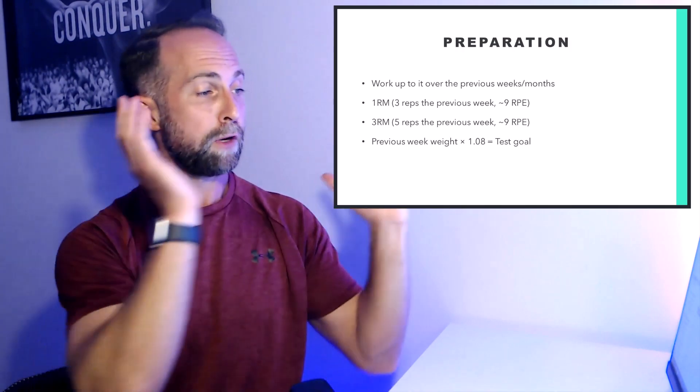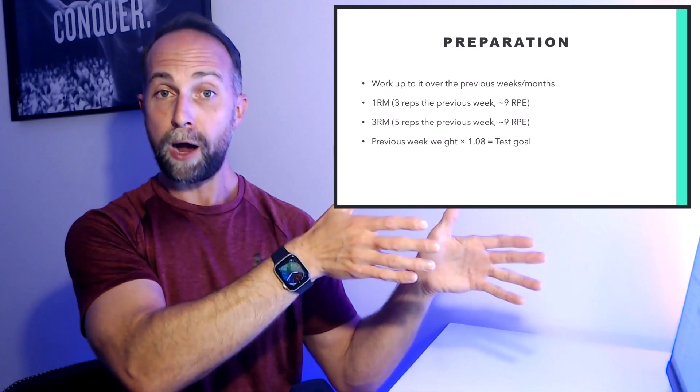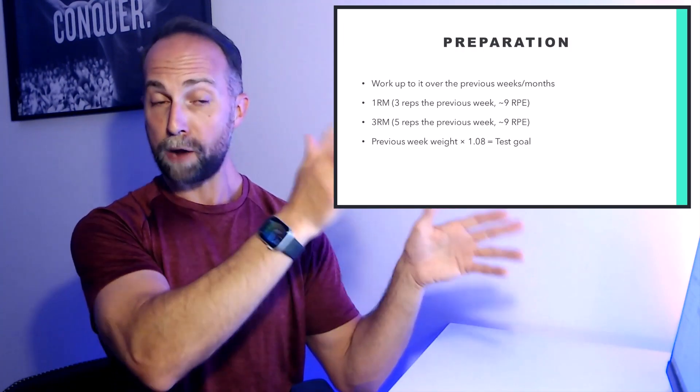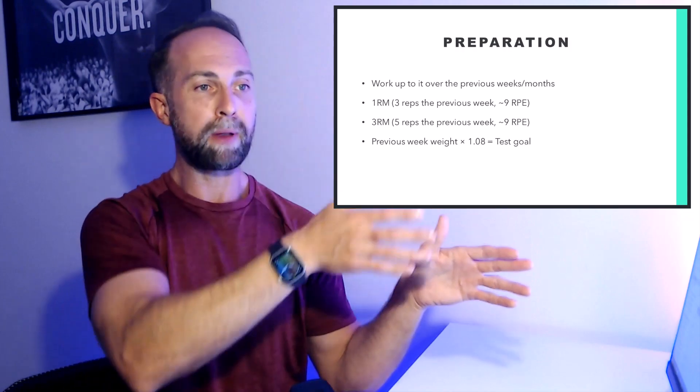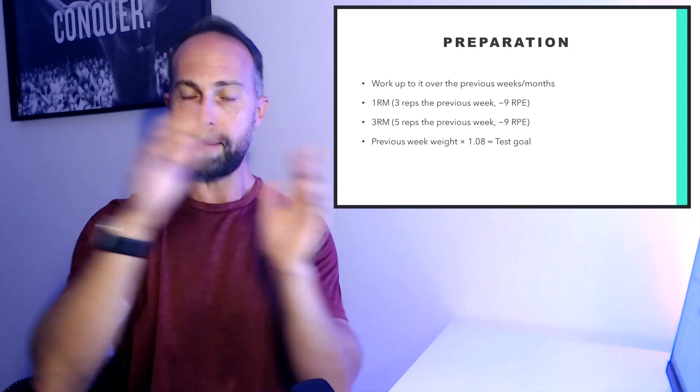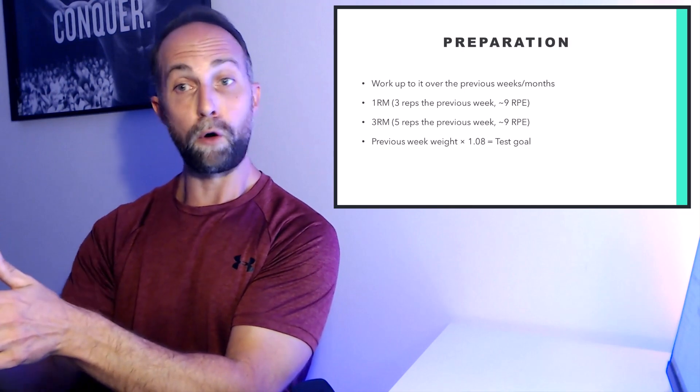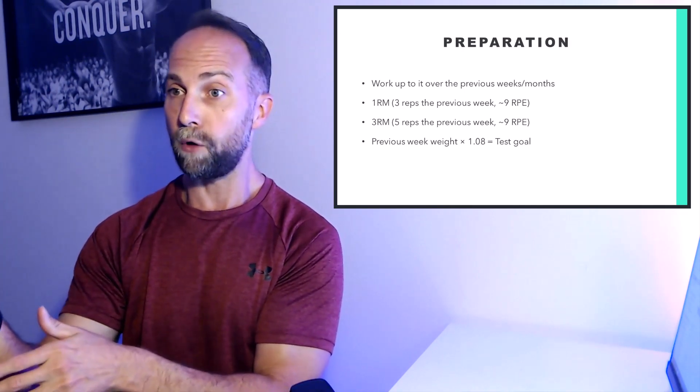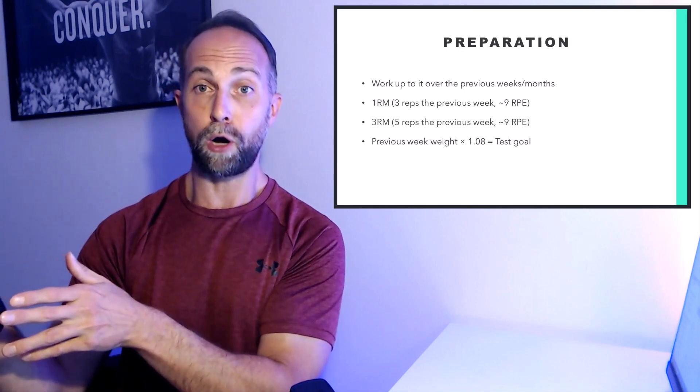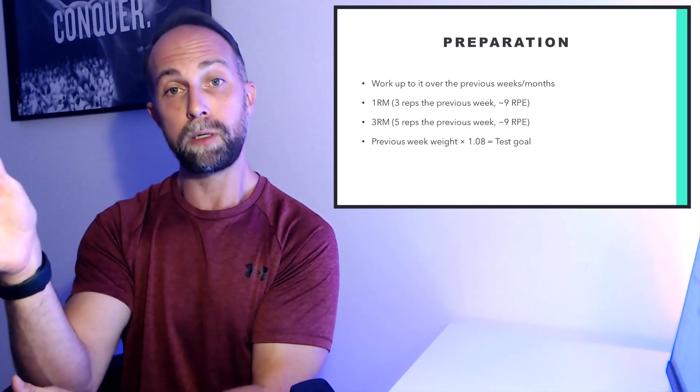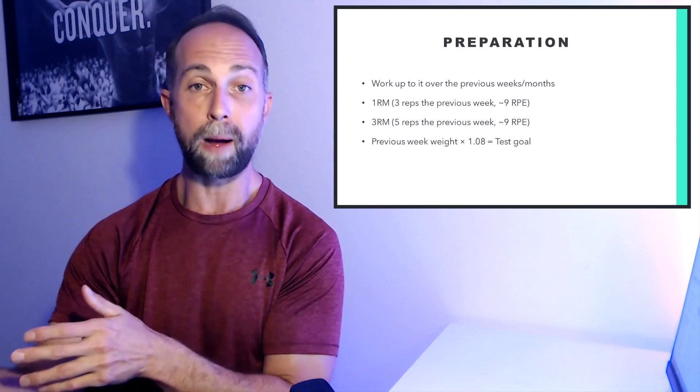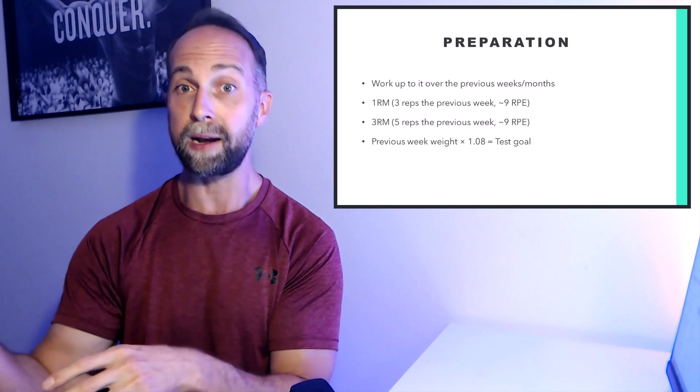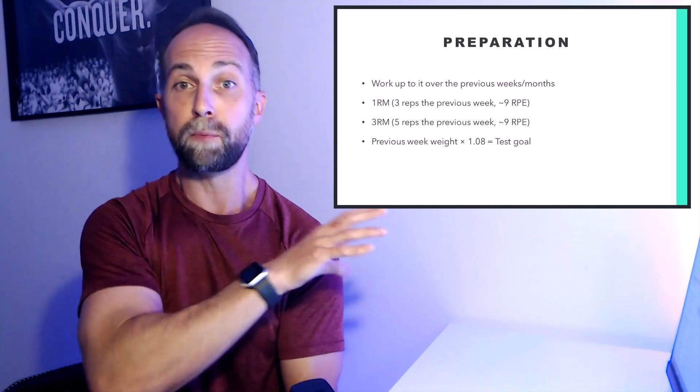So you've got that score from the previous week—your three RM at an RPE of nine or your five RM at an RPE of nine. Multiply that score by 1.08. That's a pretty good rule of thumb to give you a good target for what your new RM test should be that following week. For example, if you did three reps at an RPE of nine the previous week, and that score was 100 kilos, your goal for the next week will be for my one RM test, I'm going to be aiming for 108 kilograms.